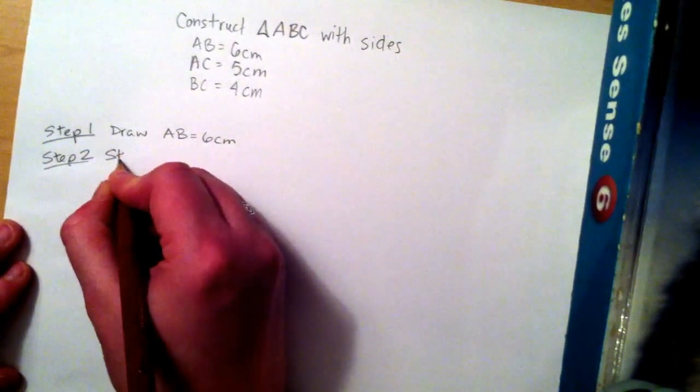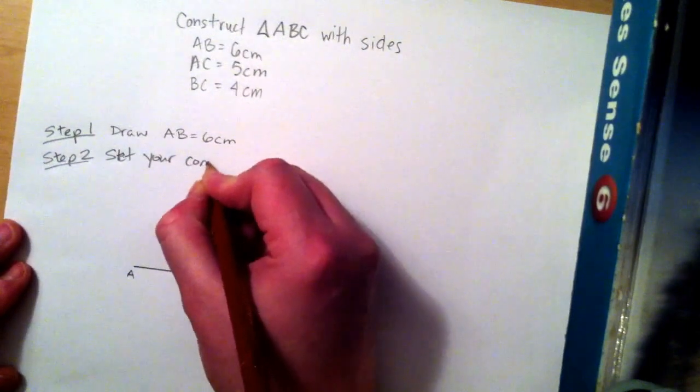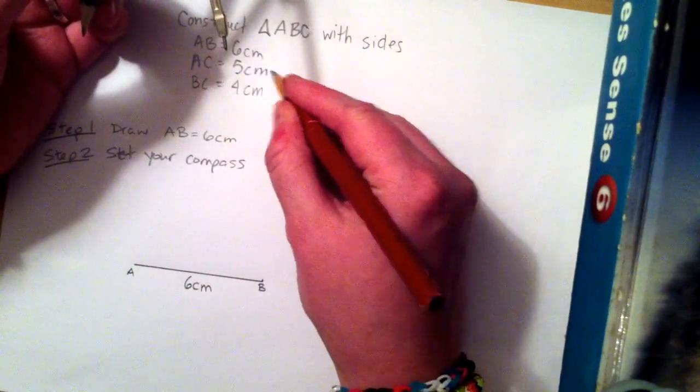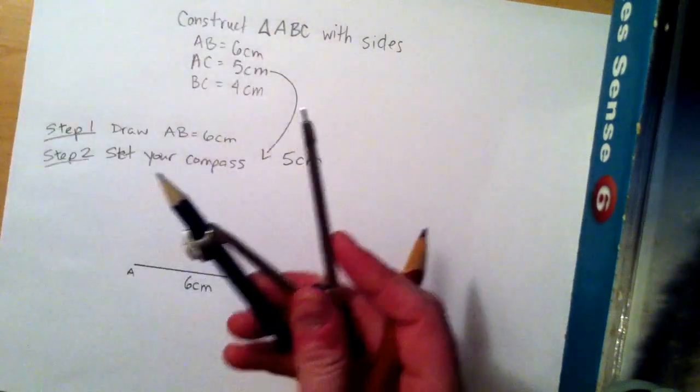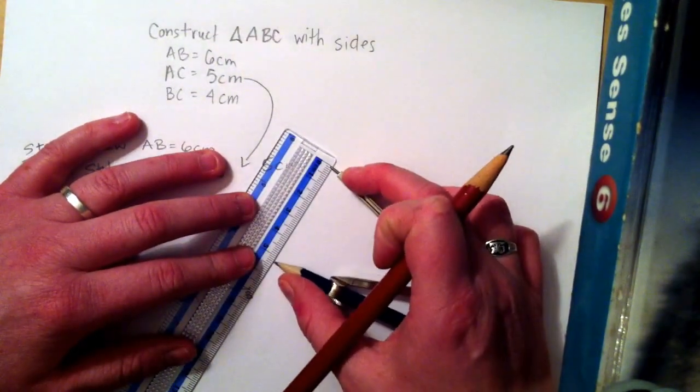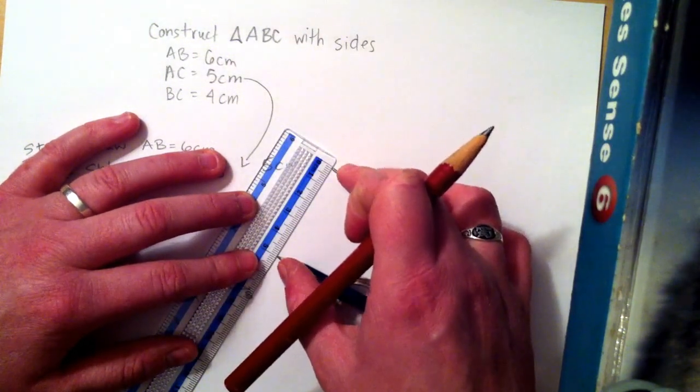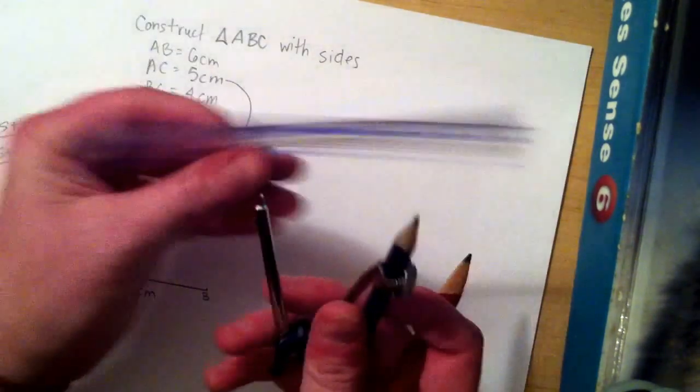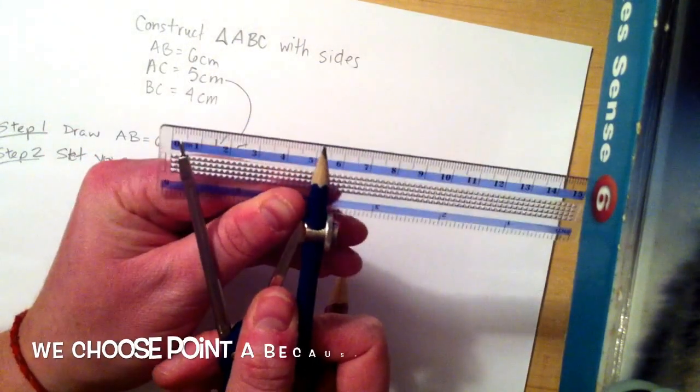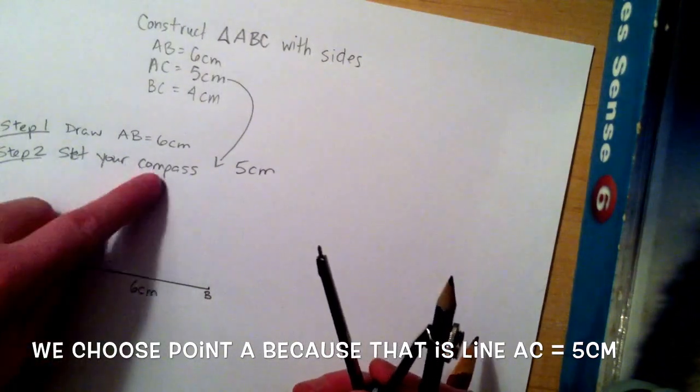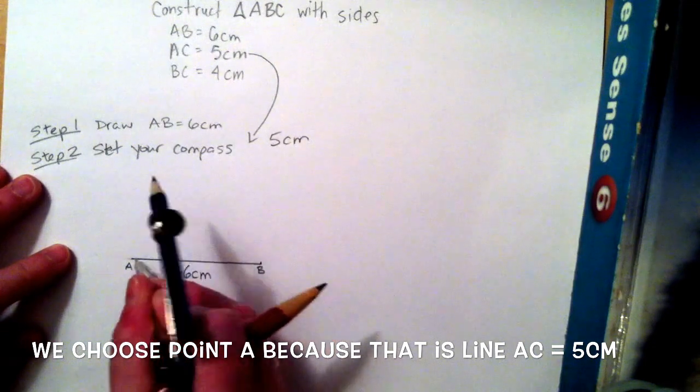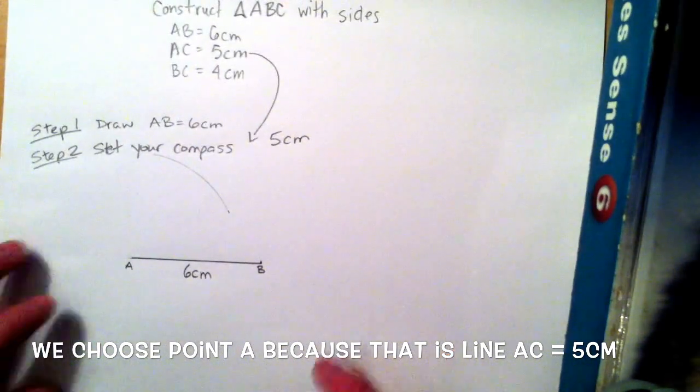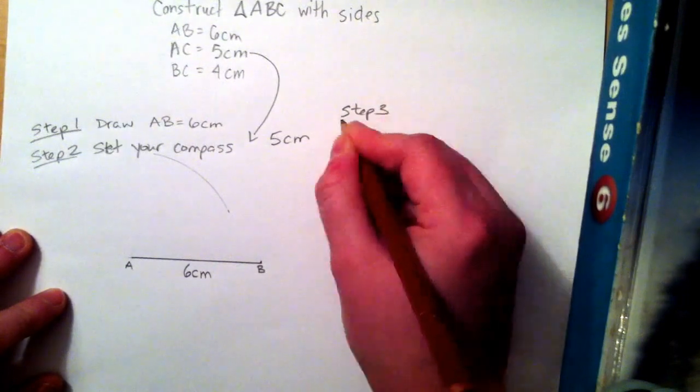Step 2 is to get out our compass and set the compass. How you set your compass is you load a pencil in and you find the length of the next side, and that one's going to be 5 cm. So I line up my compass with my ruler to 5 cm. The point between the tip and the pencil is 5 cm. Then what we're going to do is put the point on A and draw an arc. That will later become an intersection.